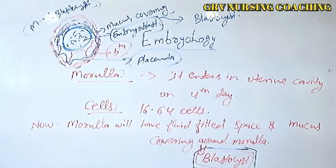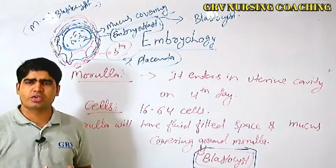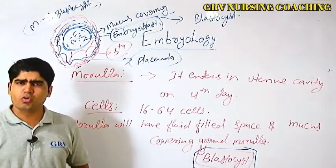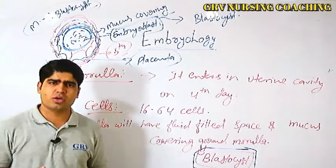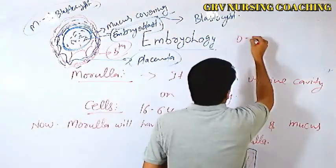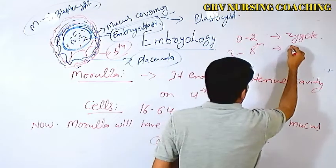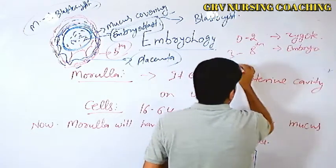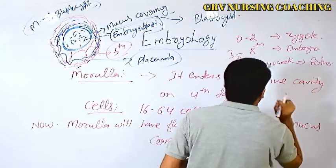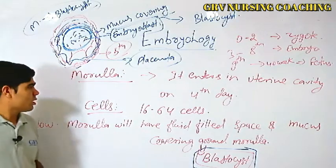So what we understand about embryology: fertilization happens, then ovulation occurs around day 14. From 0 to 2 weeks the structure is called a zygote. From the 3rd to 8th week it is called an embryo. From the 9th week onward till the 40th week it is called a fetus. These are 3 different names according to their weeks.